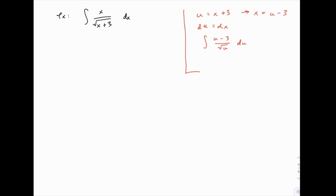This can be simplified because now we can break this up into two fractions. You could write this as the integral of u over the square root of u minus 3 over the square root of u. And then each of those pieces you could rewrite as something times u to a power, and apply the power rule, and so on. So you could do it that way, and then re-substitute back into terms of x.